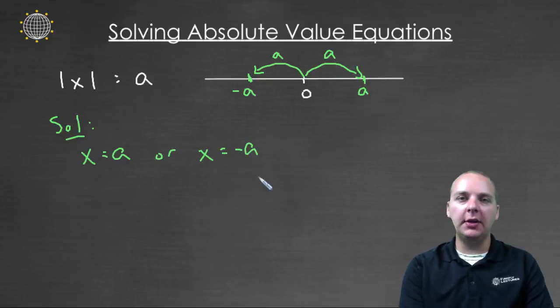That's kind of strange because linear equations used to only have one answer. Well, this is not really a linear equation, this is an absolute value equation. Even though it might look linear, if it has absolute values, very frequently these will have more than one answer because there's more than one number whose absolute value might give you a.